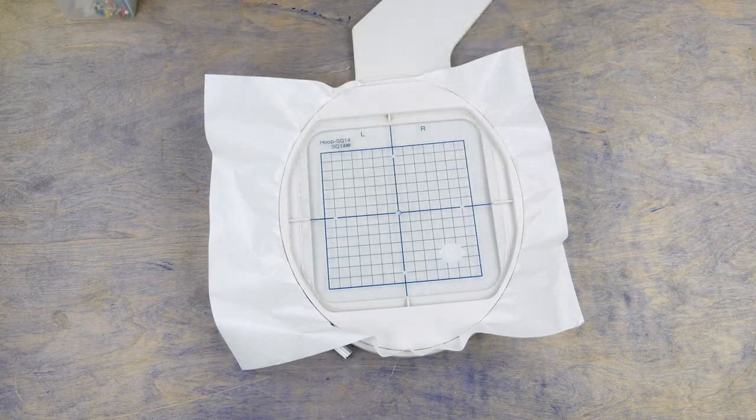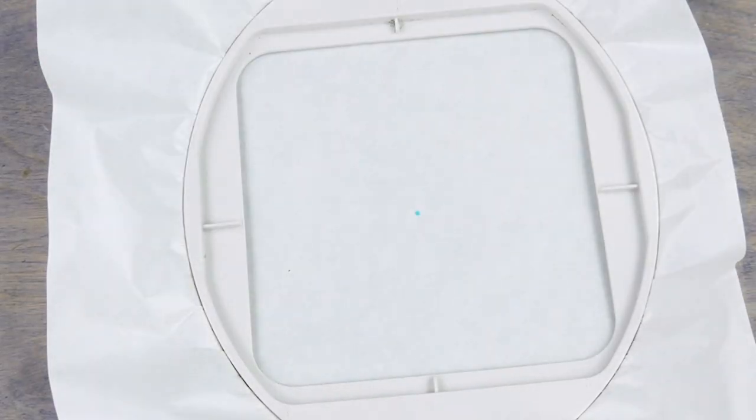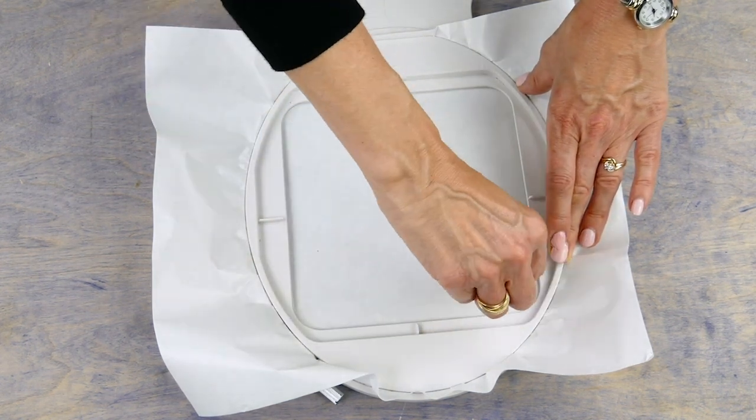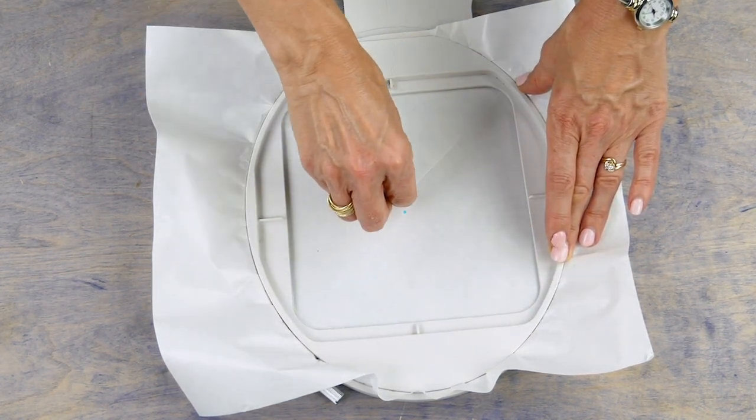I'm going to lightly score the paper around the edge of the hoop with a pin and from corner to corner so I can easily pull the paper away.